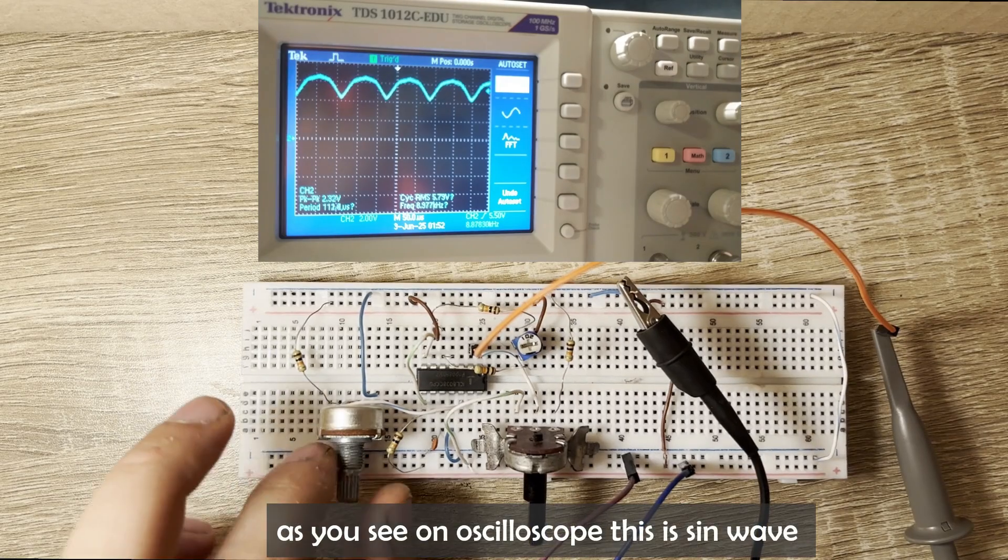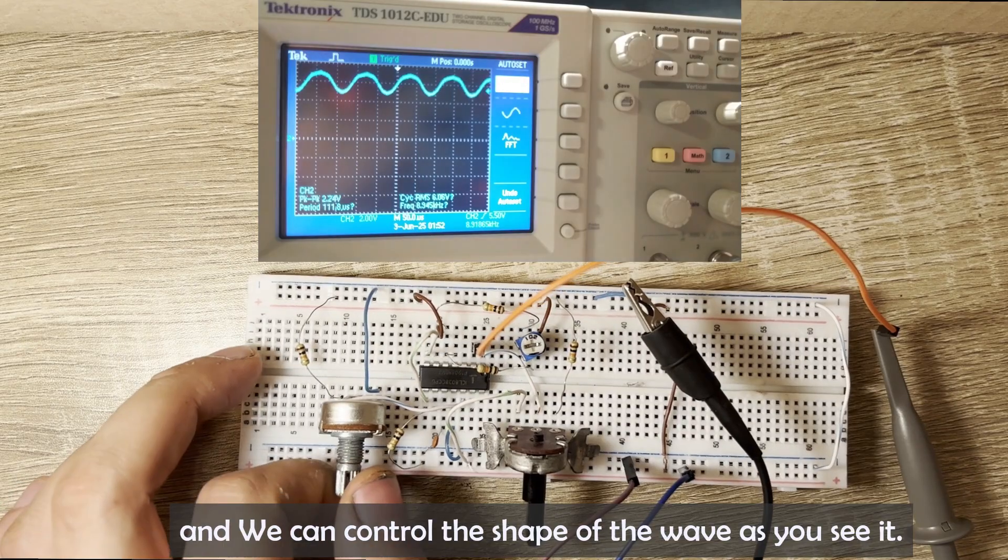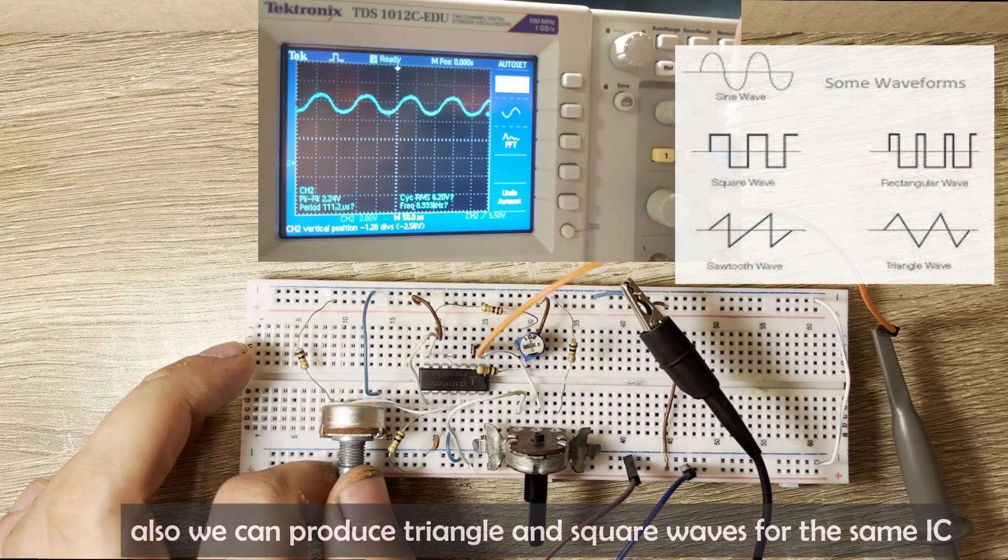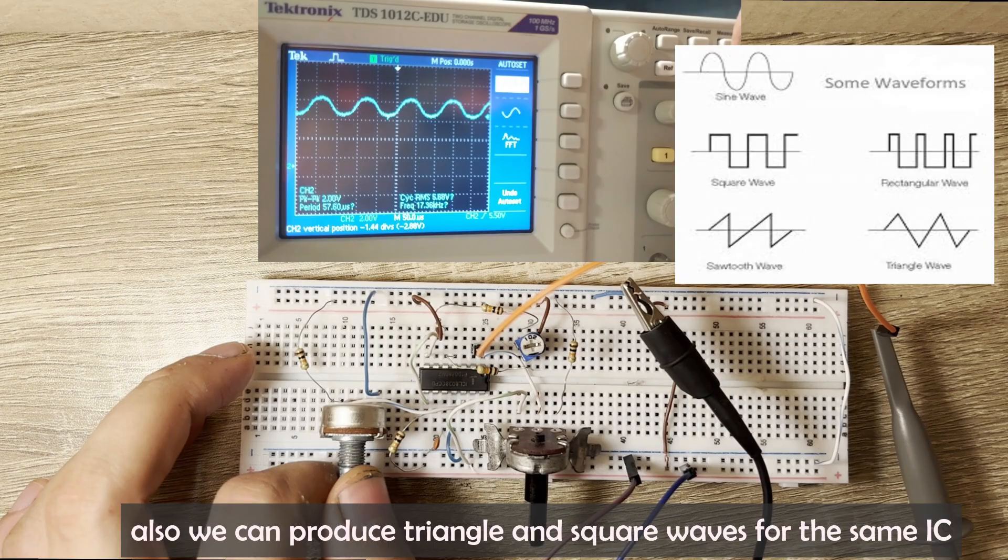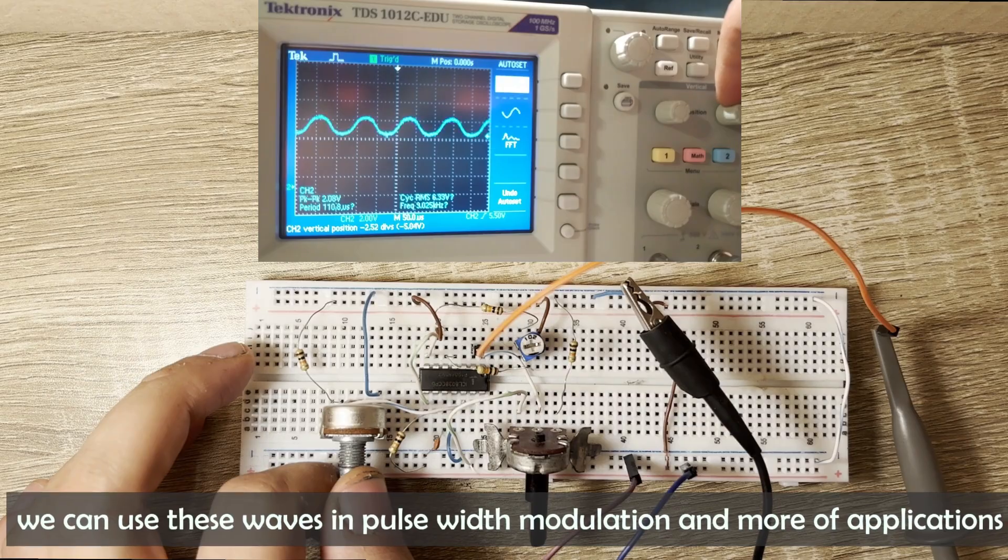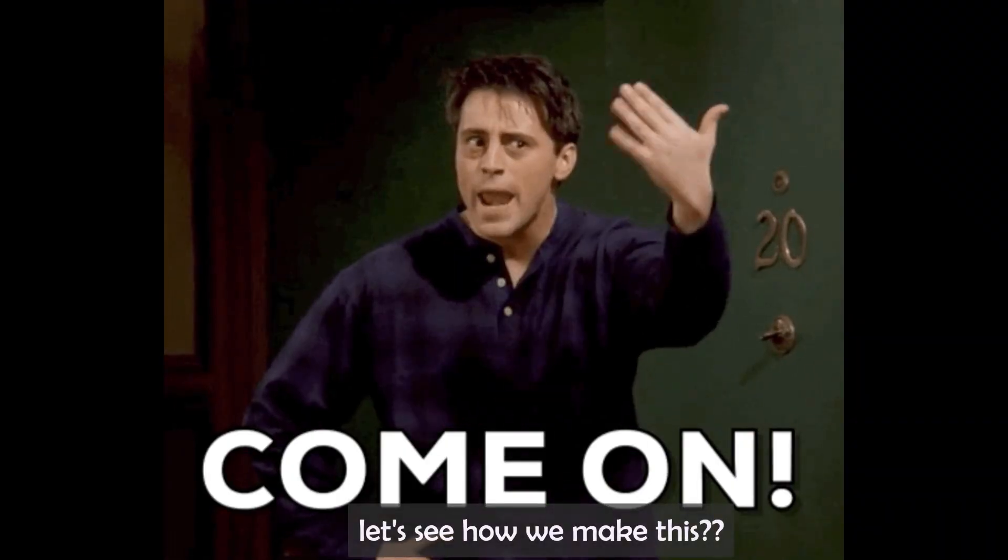As you see on the oscilloscope, this is a sine wave, and we can control the shape of the wave as you see it. Also, we can produce triangle and square waves for the same IC. We can use these waves in pulse width modulation and more applications. Let's see how we make this.